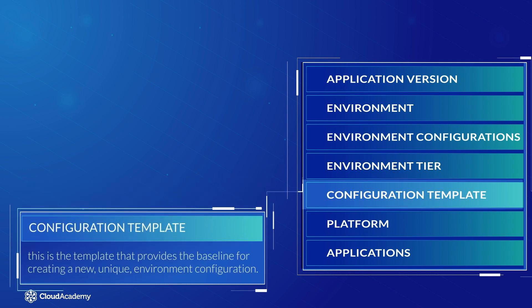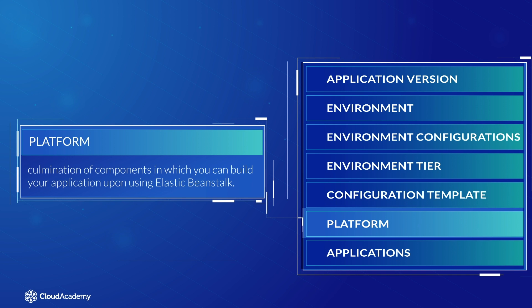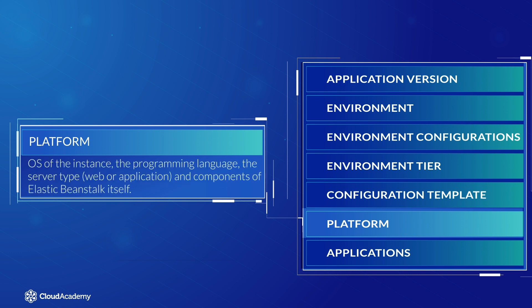The Configuration Template: this is a template that provides the baseline for creating a new, unique environment configuration. Platform: a platform is a culmination of components in which you can build your application upon using Elastic Beanstalk. These comprise of the operating system of the instance, the programming language, the server type — web or application — and components of Elastic Beanstalk itself, and as a whole can be defined as a platform.